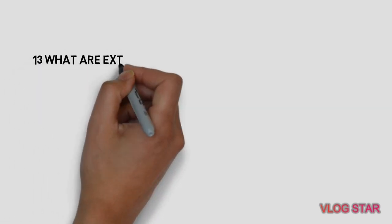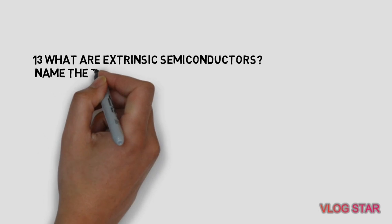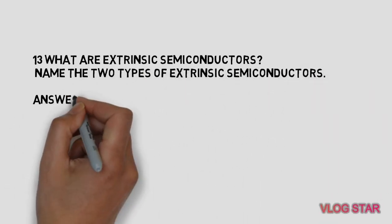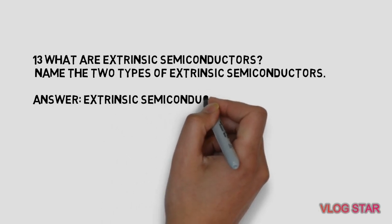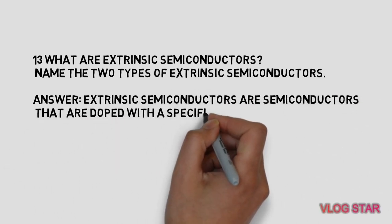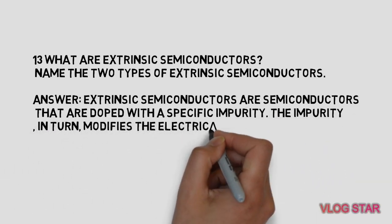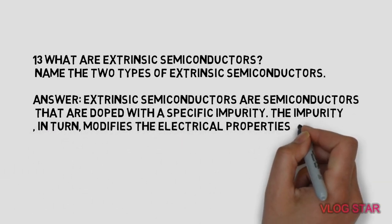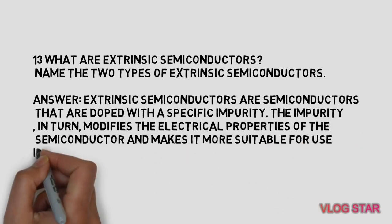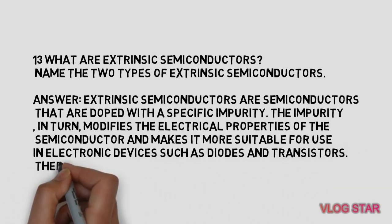What are extrinsic semiconductors? Name the two types. Extrinsic semiconductors are semiconductors that are doped with a specific impurity. The impurity modifies the electrical properties of the semiconductor and makes it more suitable for use in electronic devices such as diodes and transistors. There are two types of extrinsic semiconductors.